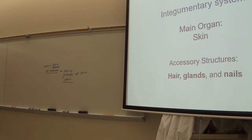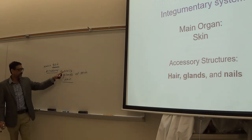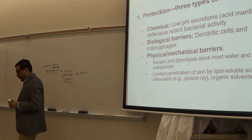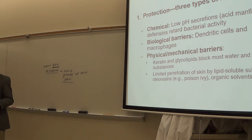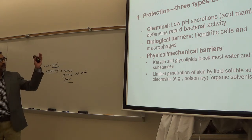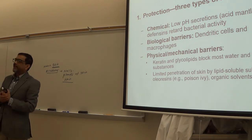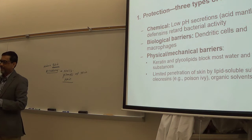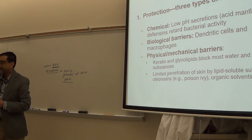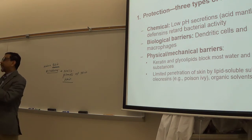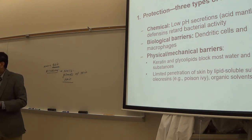The main organ is the skin. Accessory structures are nails, hair, and glands of the skin. Your integumentary system or skin provides protection in three ways. One is called chemical protection. Your skin secretes low pH material. Low pH means acidic, and that acidic secretion kills the microorganisms. That is chemical protection given by the skin.